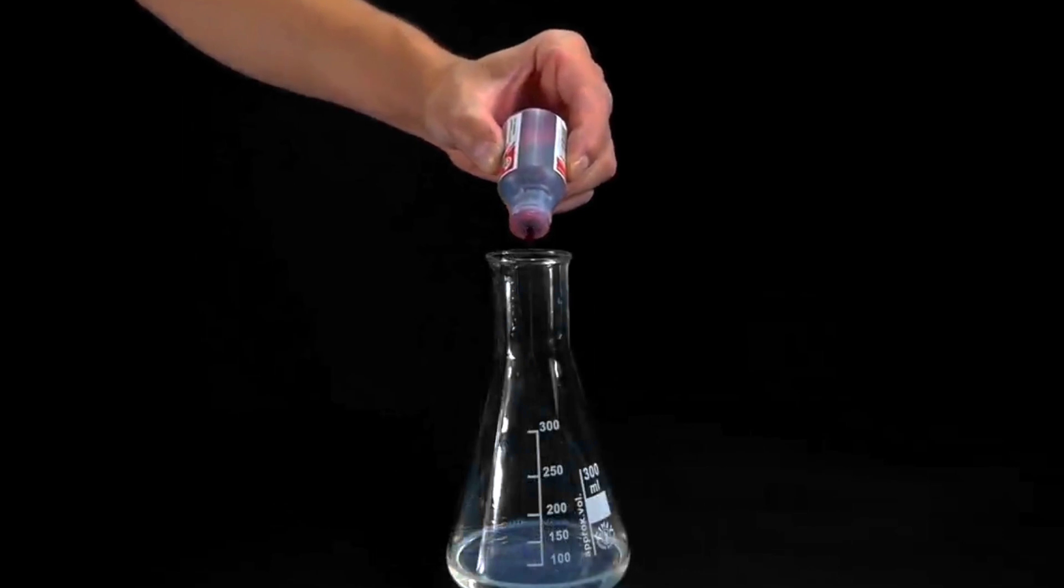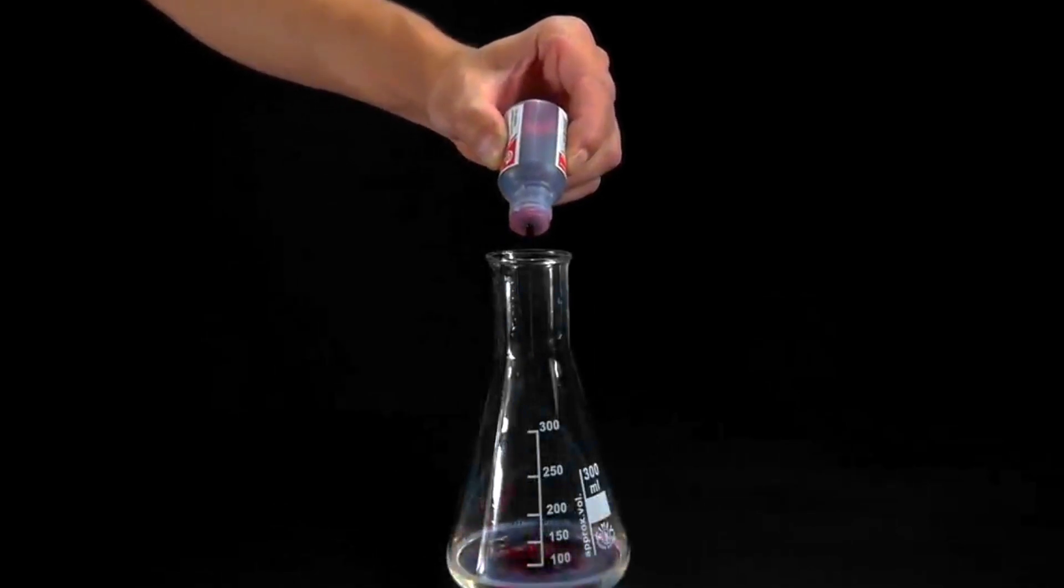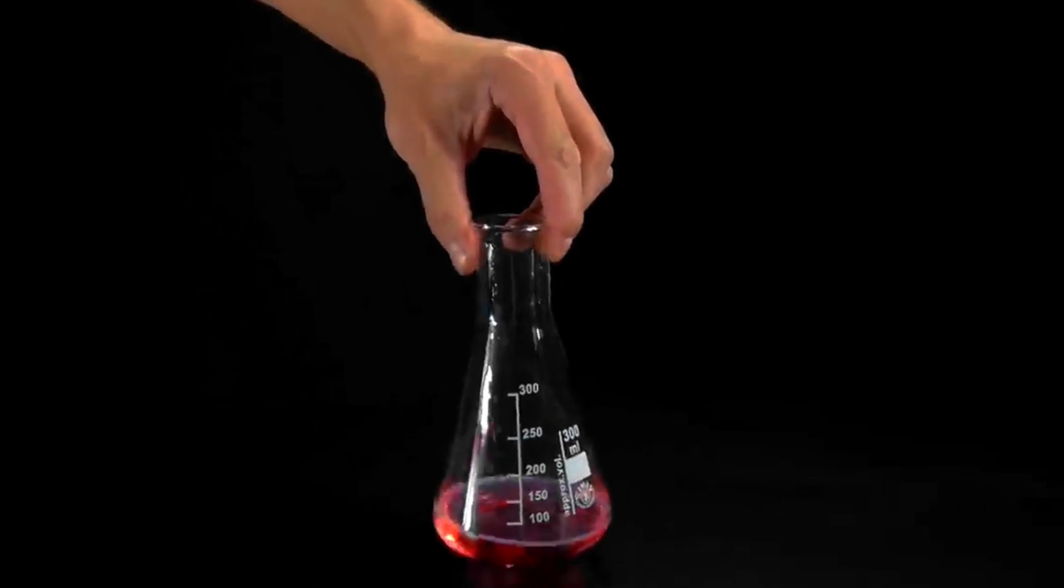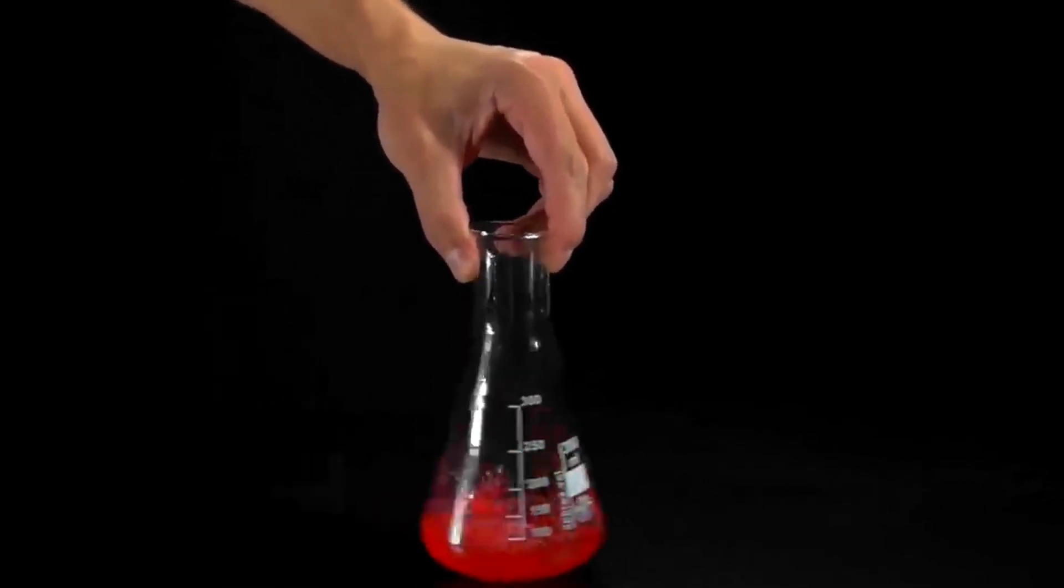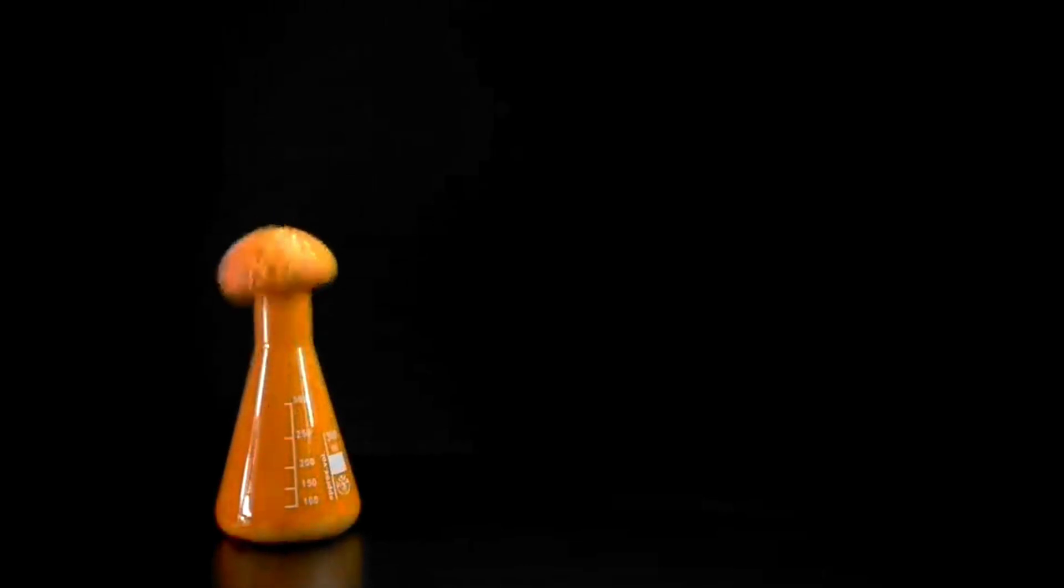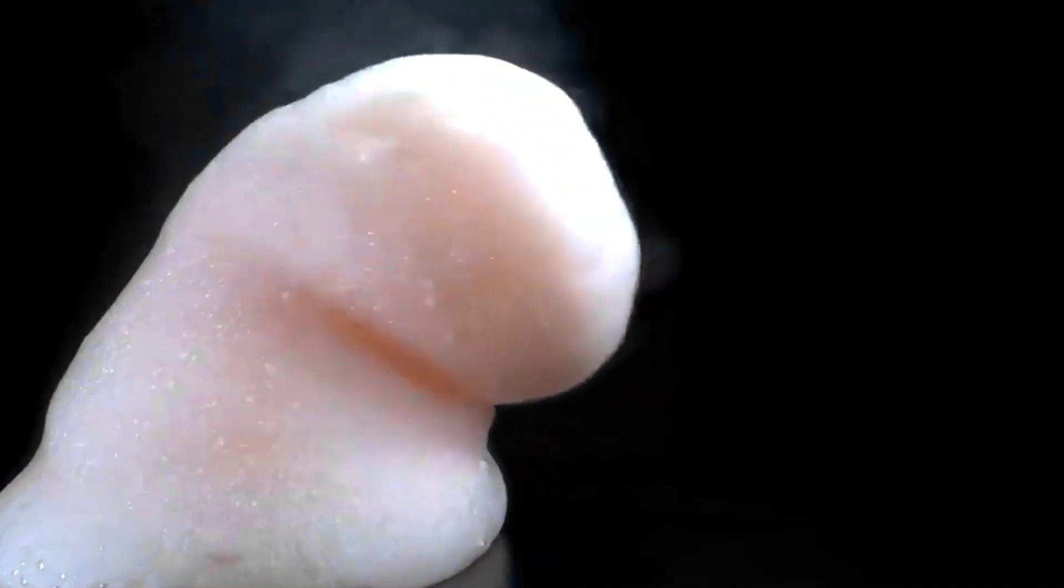First, pour some hydrogen peroxide into the bottle or flask. Next, add a few drops of food coloring if desired, and a generous squirt of liquid dish soap. In a separate container, mix a small amount of potassium iodide with water to create a saturated solution. Quickly pour the potassium iodide solution into the bottle with the other ingredients and step back.